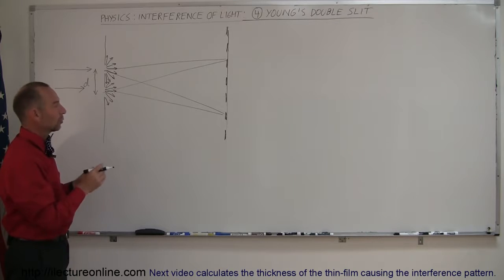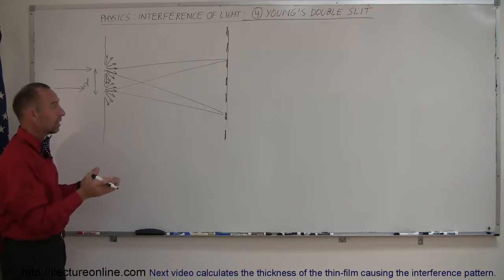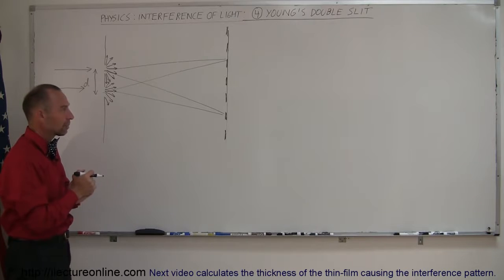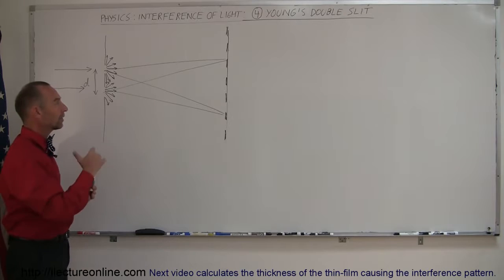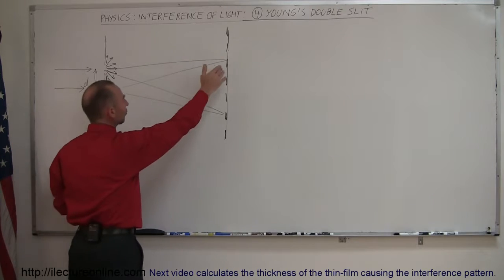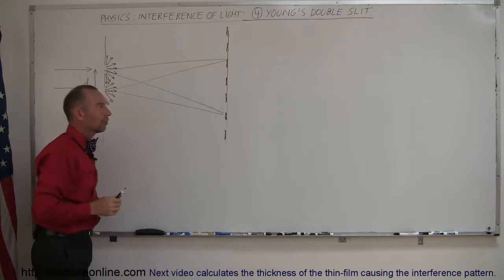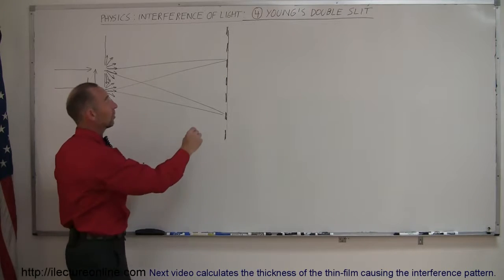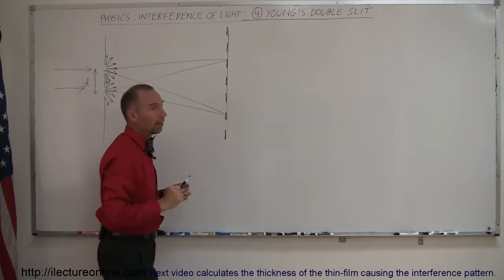There will be path length differences at different locations on the screen. If the path length difference is exactly equal to one wavelength, two wavelengths, or three wavelengths, then you'll have constructive interference. If the path length difference is equal to half a wavelength, one and a half, or two and a half wavelengths, then you'll have destructive interference. That's why we have these patterns.